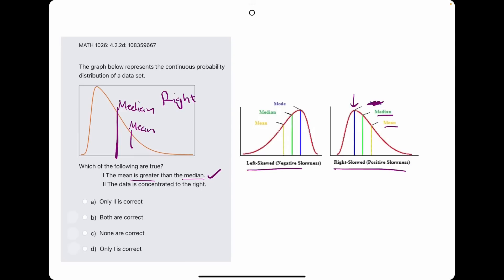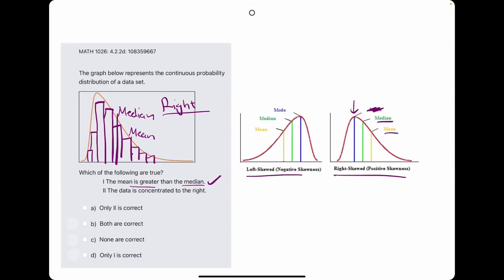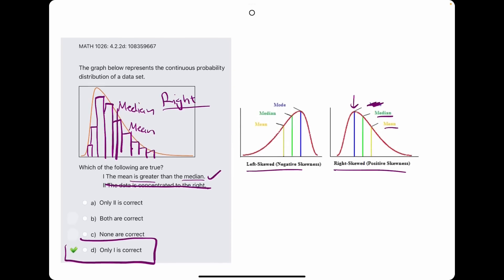And then they say the data is concentrated to the right. Now, it's called a right skewed graph, but if you look at this curve, this curve represents a bunch of data stacked up. Imagine this was a bar graph and we had little bars sticking up. These bars would be doing something like this, where the majority of the data is stacked up to the left, concentrated to the left, not to the right. So only one is correct in this case.